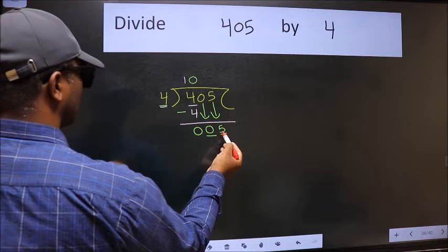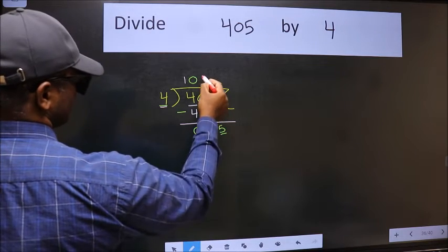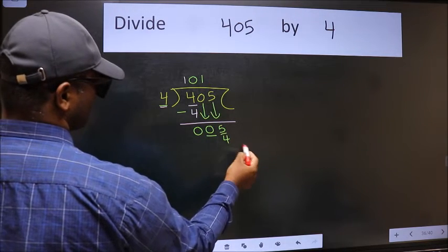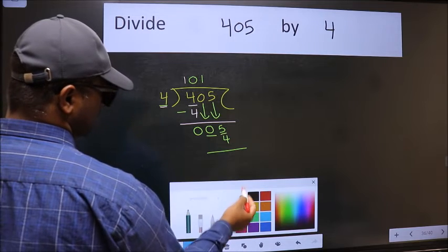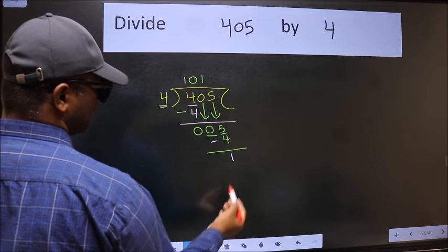Now 5. A number close to 5 in the 4 table is 4 ones, 4. Now we should subtract. We get 1.